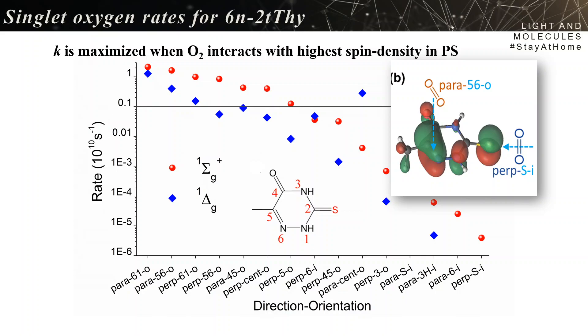And the rate is maximized when the oxygen interacts with the highest spin density in the photosensitizer, that in this case is the out-of-plane pi.